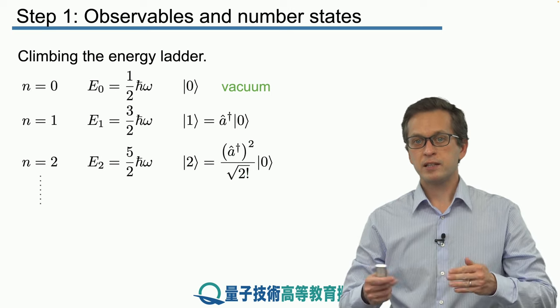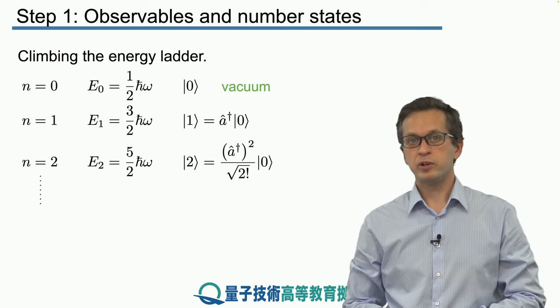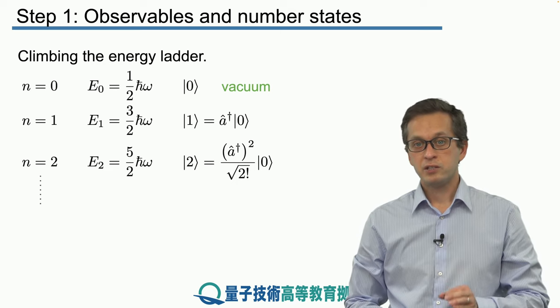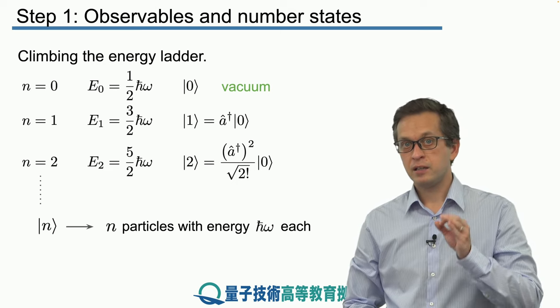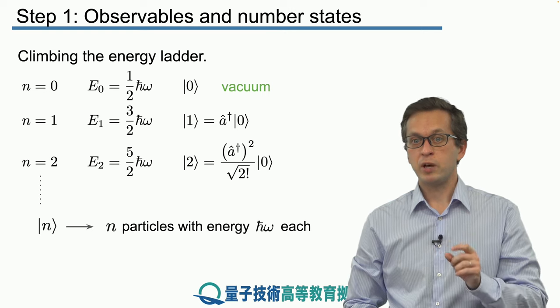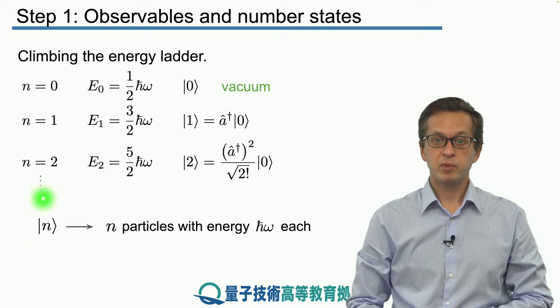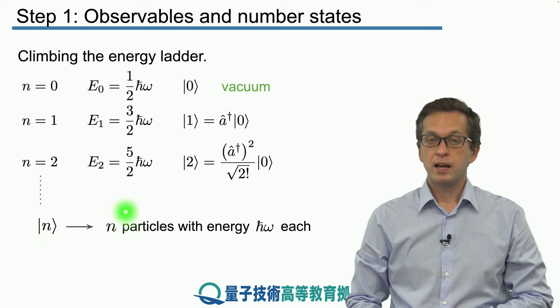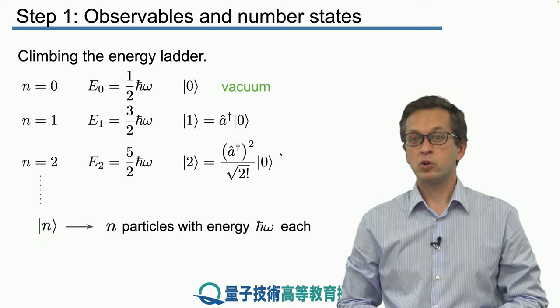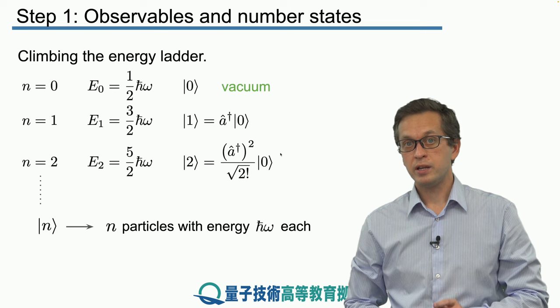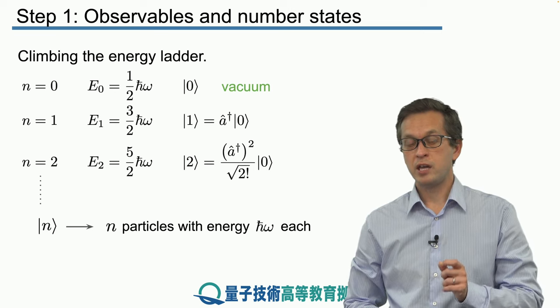As we apply these creation operators, we go higher and higher. Each time, we add a quantum of energy equal to ℏω. We can interpret the number state |n⟩ as a field state containing n particles, each with energy ℏω.